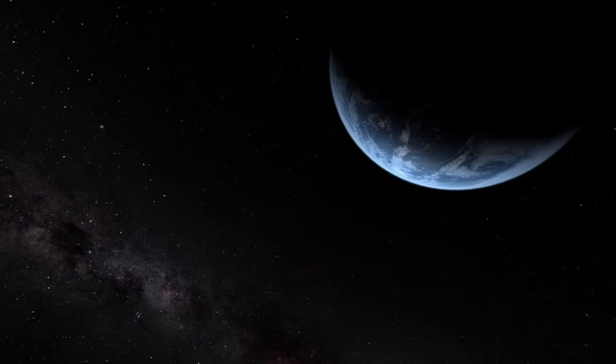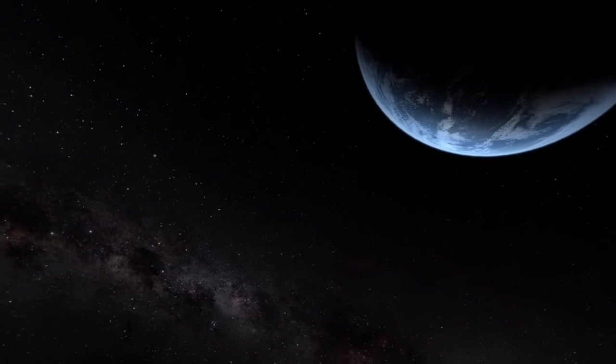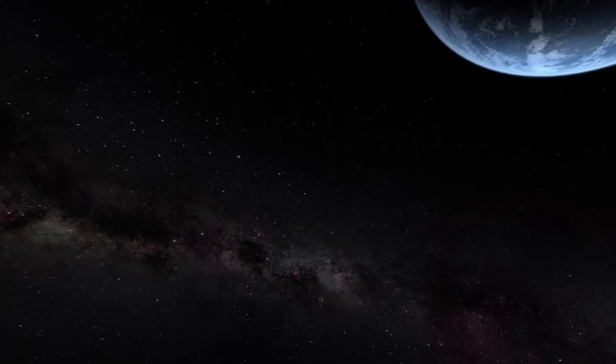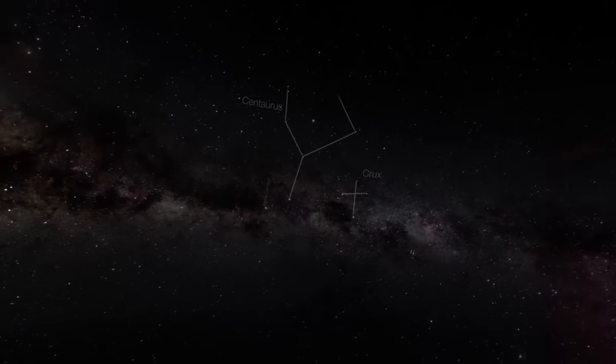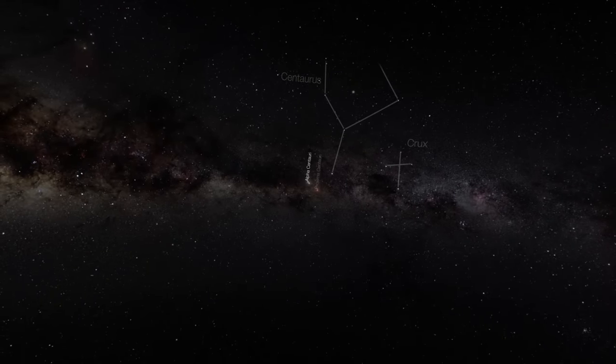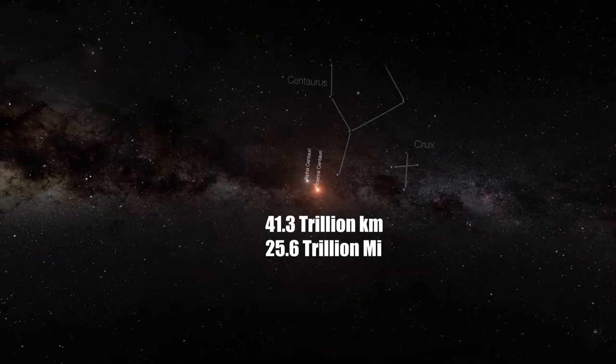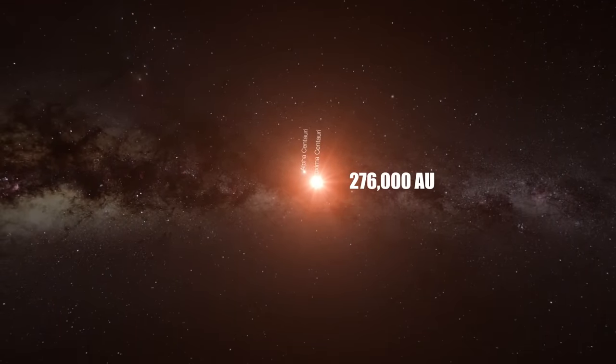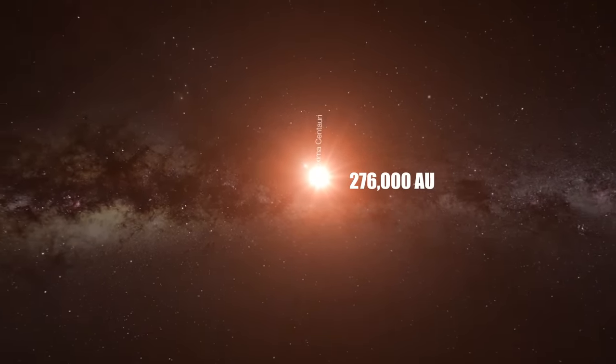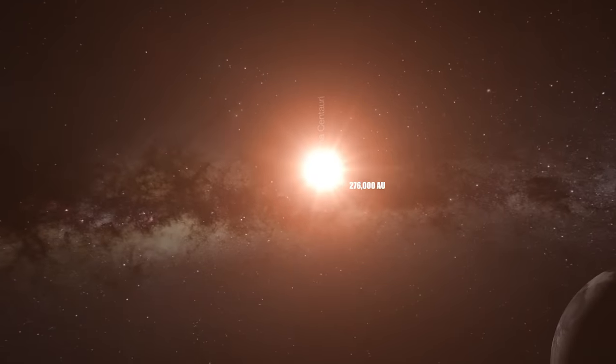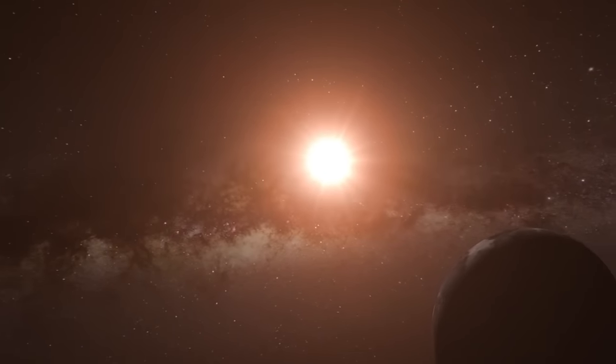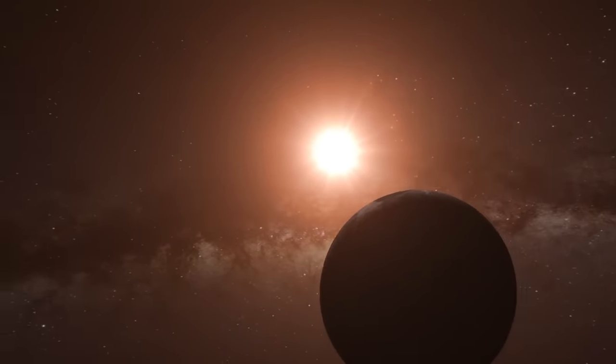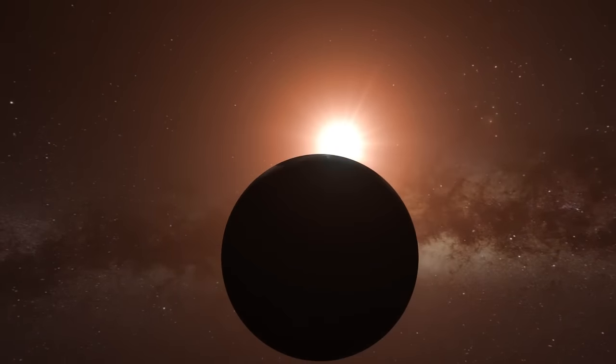As we venture beyond the confines of our solar system, our next point of interest is Alpha Centauri, the closest star system to our Sun, located about 41.3 trillion kilometers away, this distance is equivalent to over 276,000 astronomical units. At such colossal distances, the AU, a measure so convenient within our solar system, begins to lose its practicality.